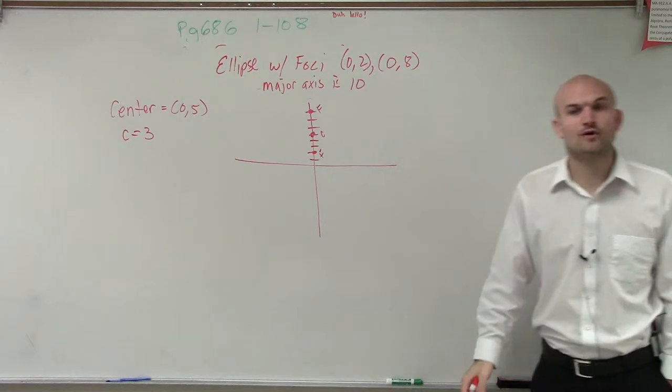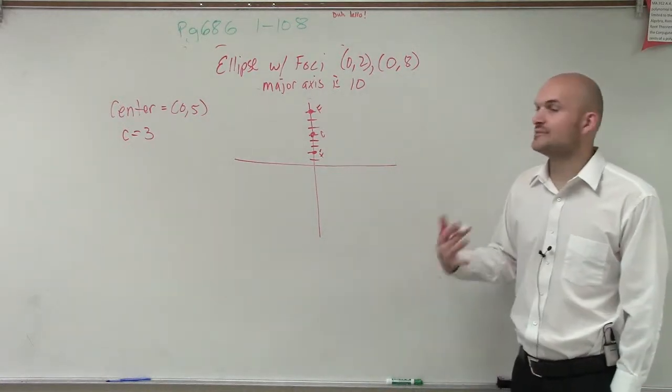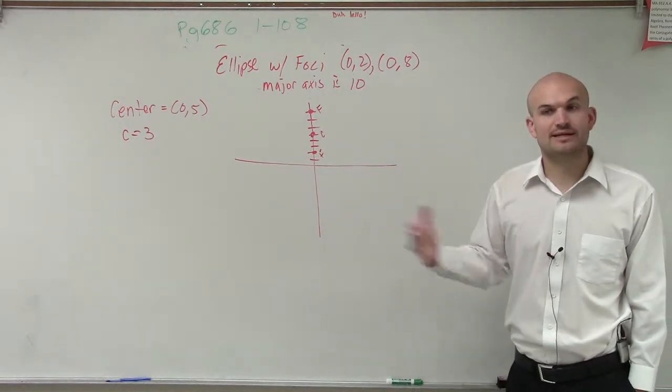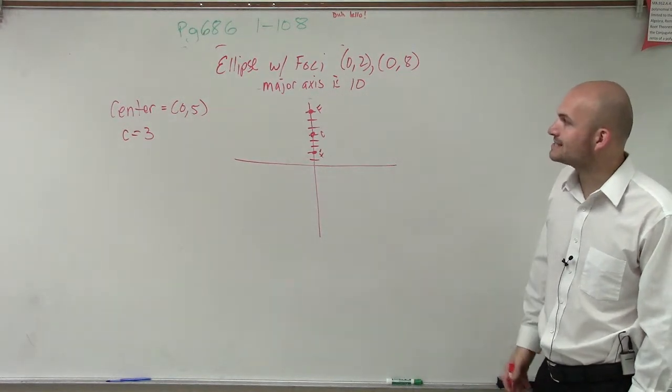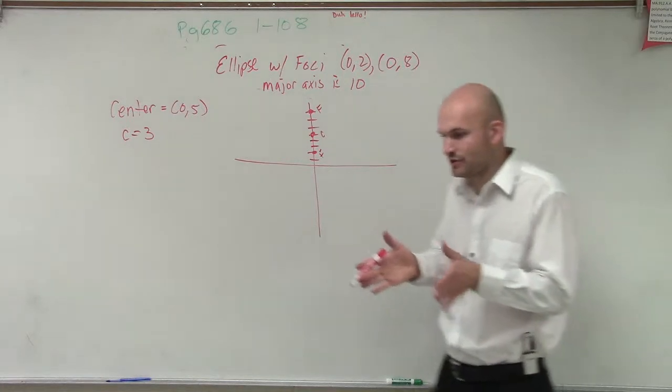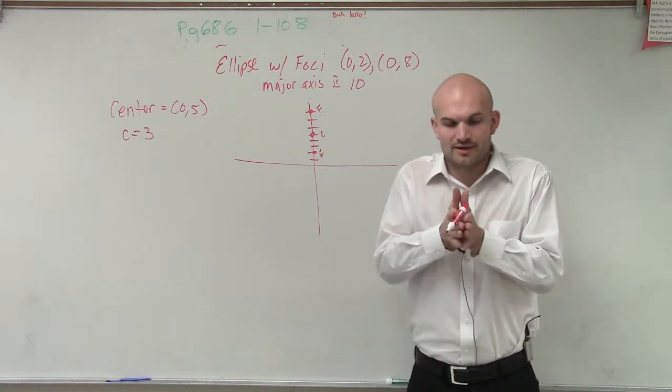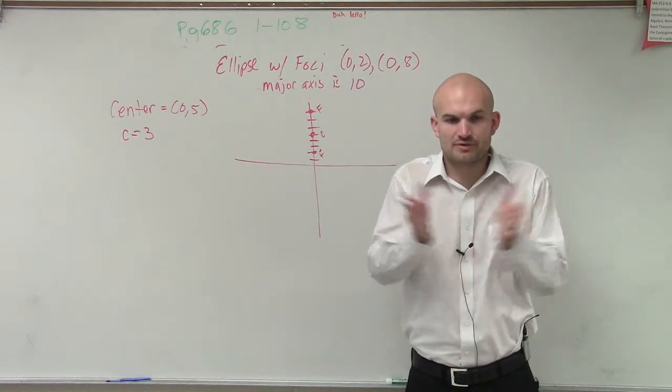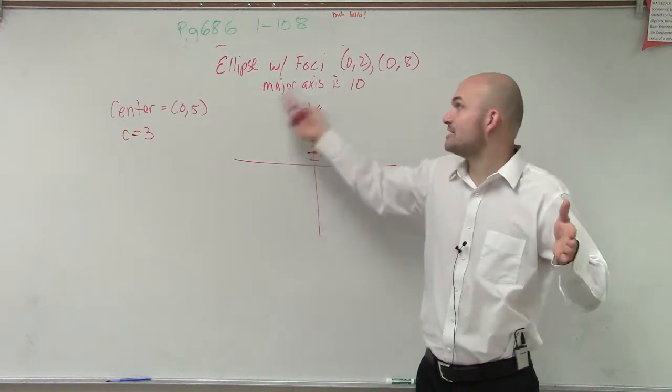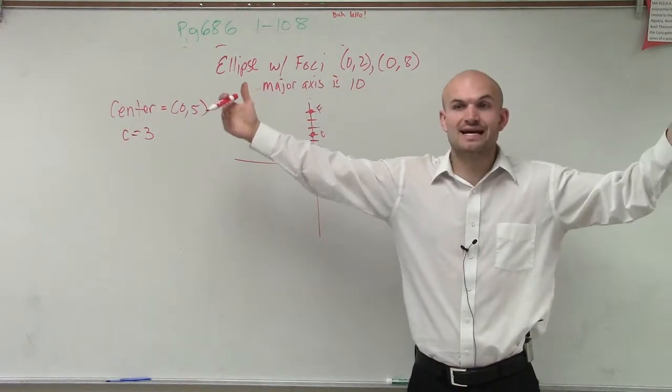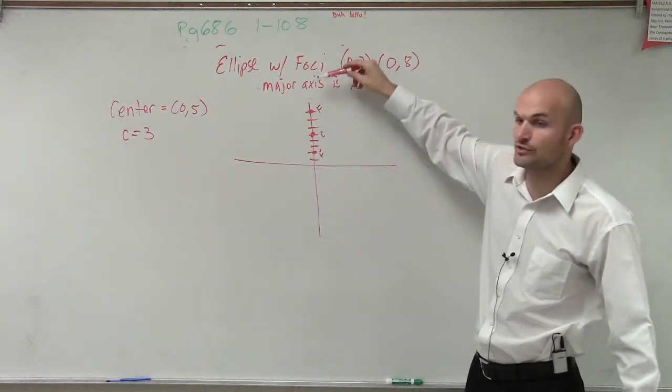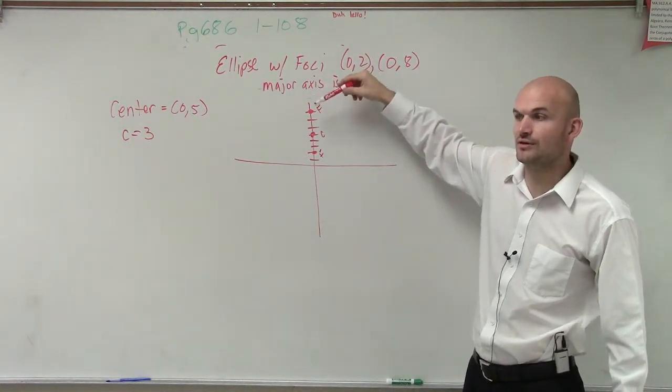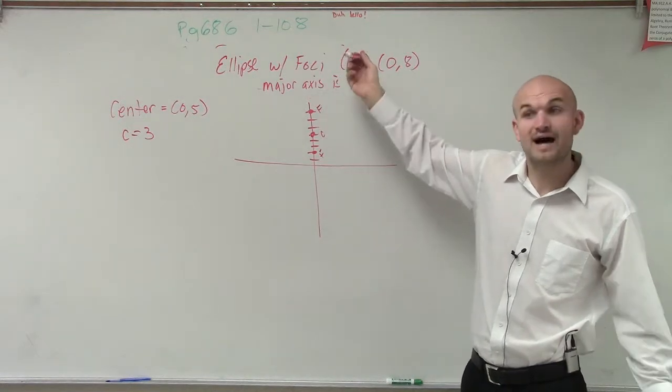Now, c is not going to be helpful in writing the equation, but it's going to be helpful in us finding b, which we need to write the equation. So now we have a is 10. If you know the center is halfway between your two vertices, they're saying the major axis from one vertex to the next is 10. That means to go from the center to a vertex, I have to travel not 10 units, but I have to travel 5.